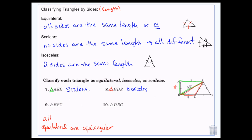Then we can look at triangle EBC — that's this triangle right here. I've got two marks, so you add those together — that whole side is going to be 16. This one's 8, and this is 8 times the square root of 2, so again three that are completely different — scalene. And finally, triangle DBC — the yellow one — all three have the marks for congruency, so they're all the same — equilateral.